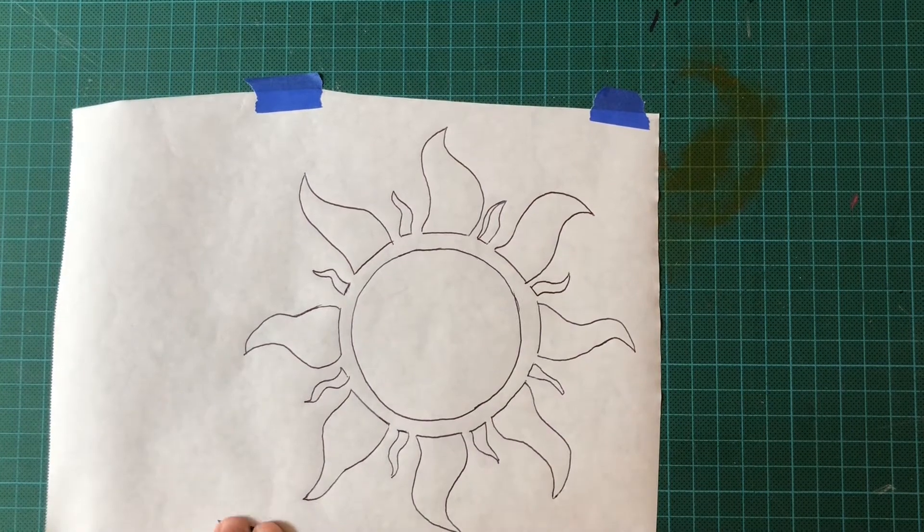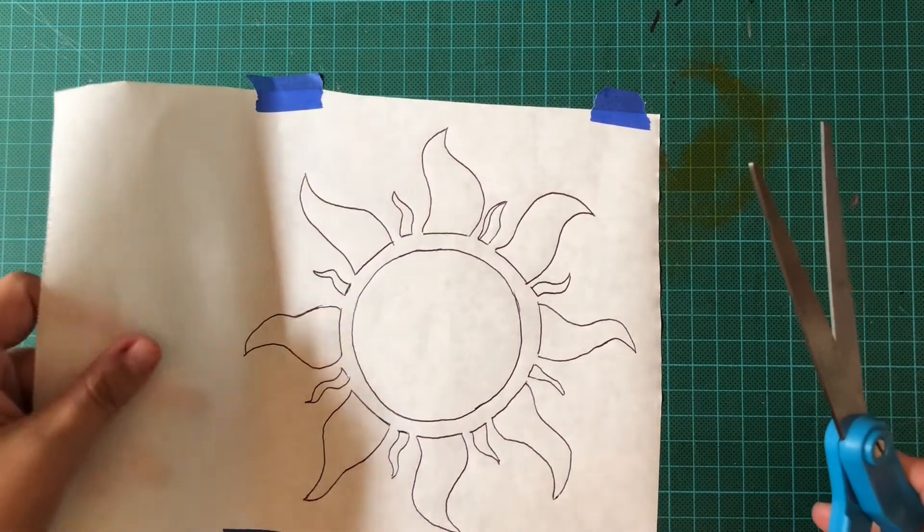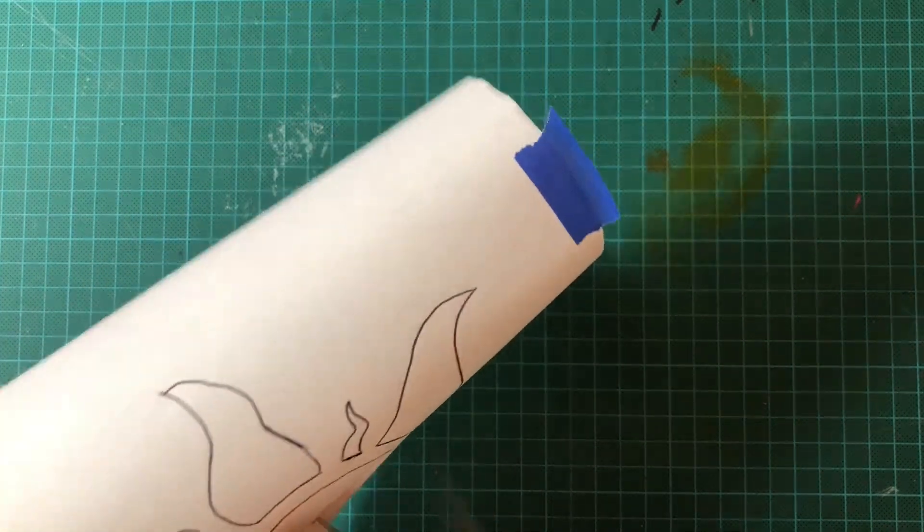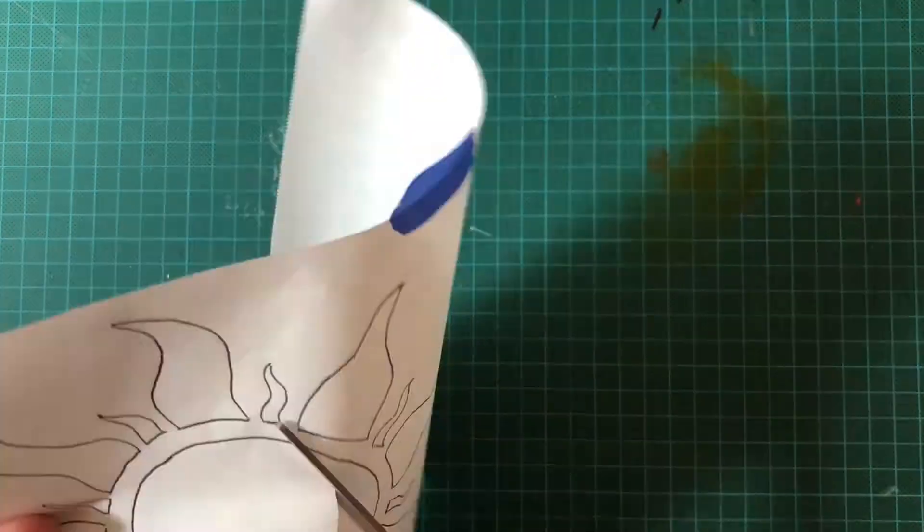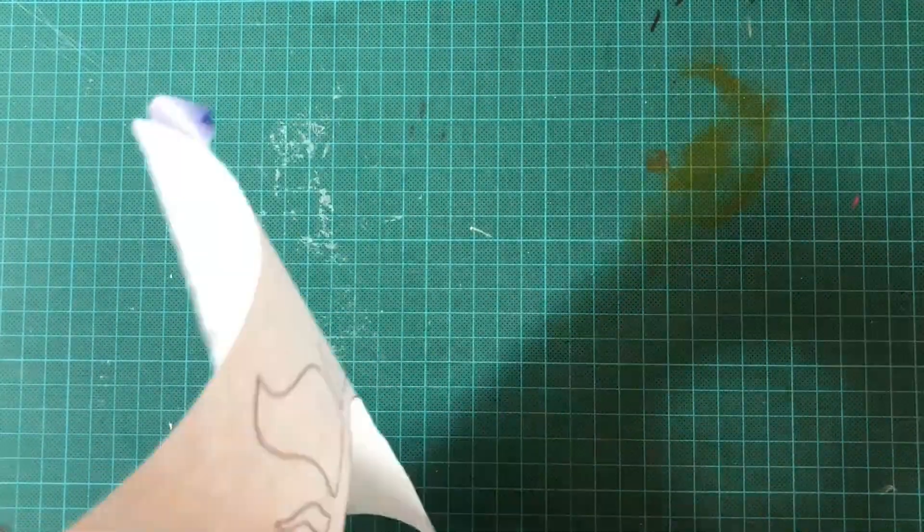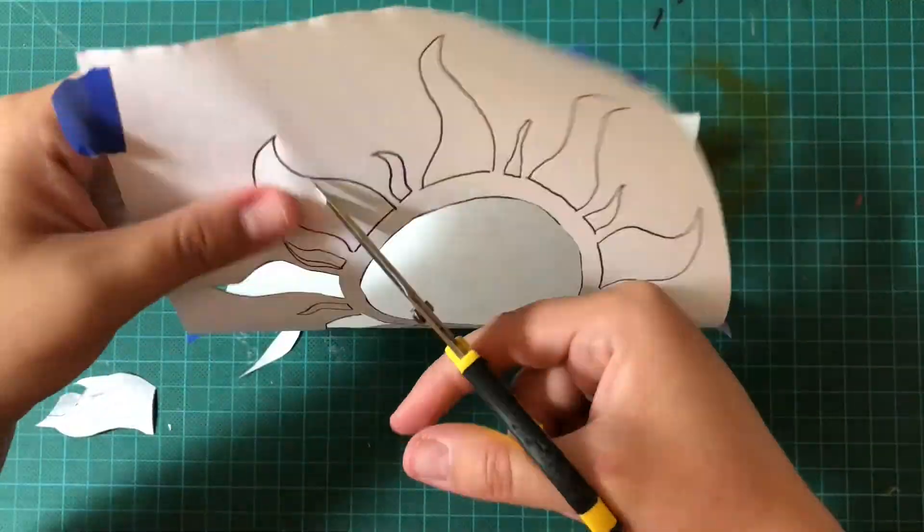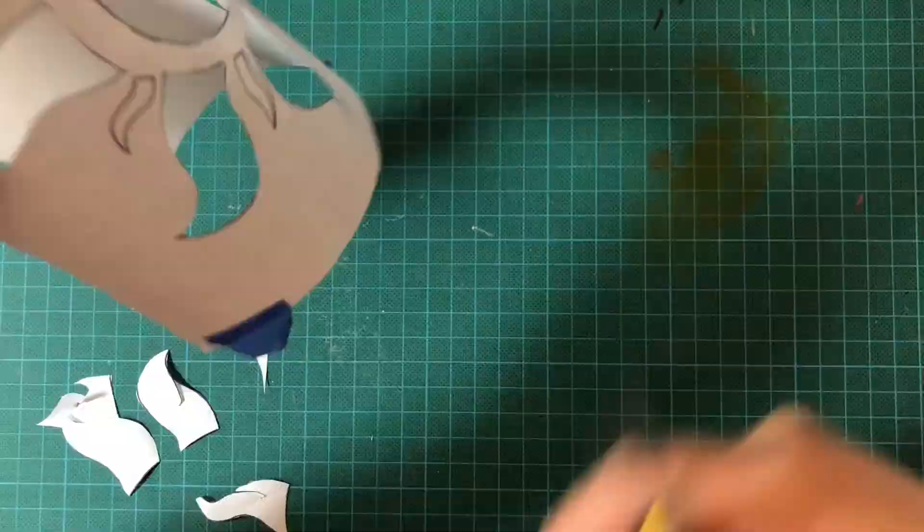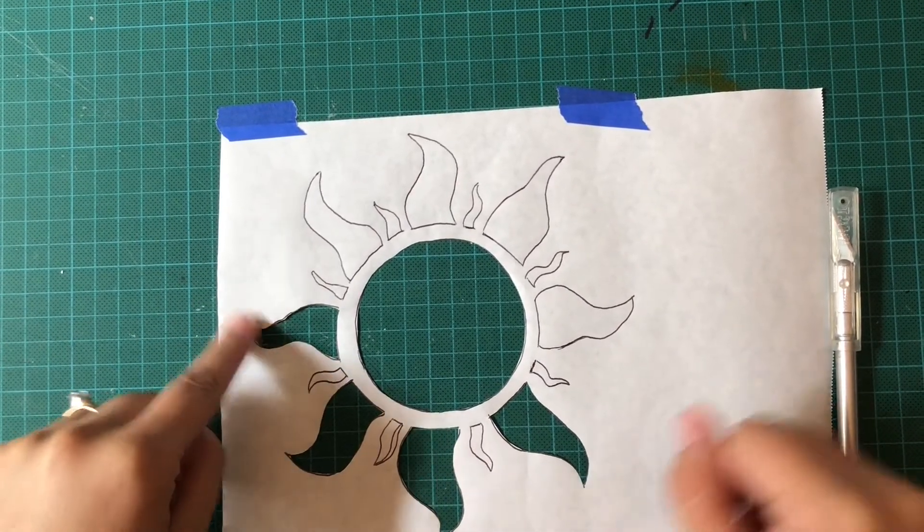We don't want to do too much creasing or folding so we want to be really gentle as we kind of get our scissor to the inside of the paper. So you can definitely cut out your design with scissors, but if you have smaller details or curvier shapes you can also use an exacto blade.